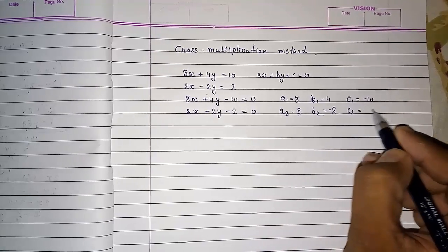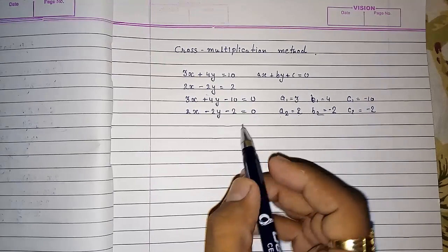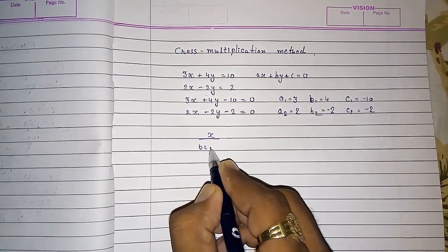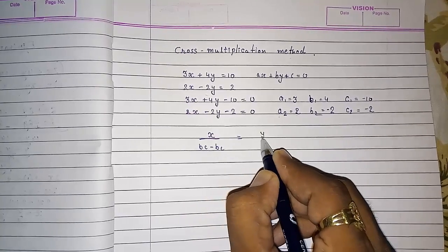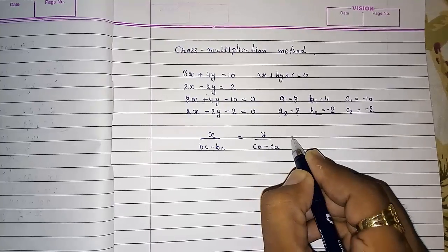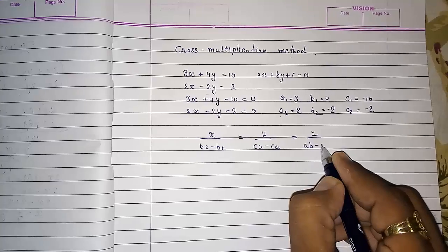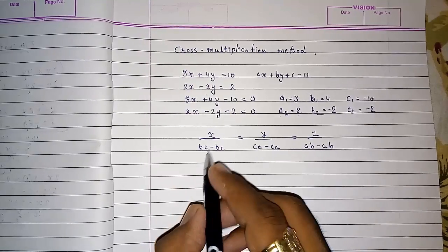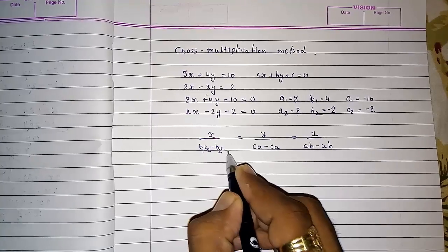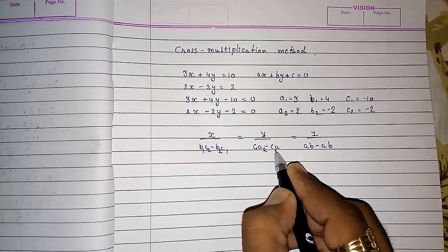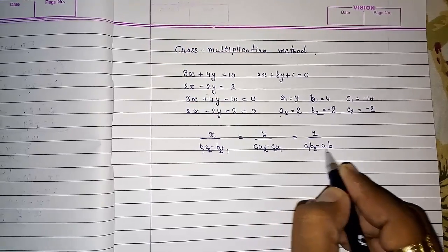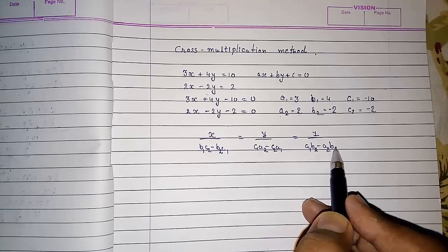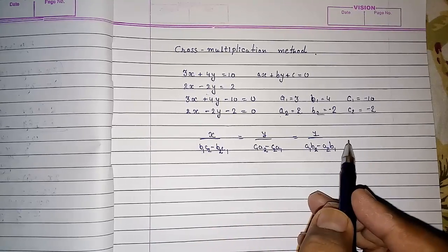C2 equals minus 2. Now the formula for cross multiplication is: X upon (B1C2 minus B2C1) equals Y upon (C1A2 minus C2A1) equals 1 upon (A1B2 minus A2B1). An easy trick to remember this is to keep the pattern 1-2, 2-1 for each pair: BC minus BC, then CA minus CA, and AB minus AB.